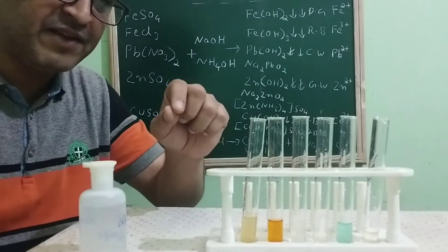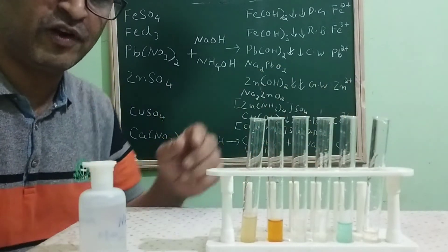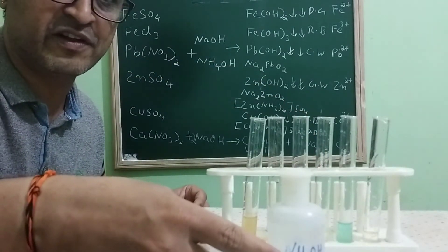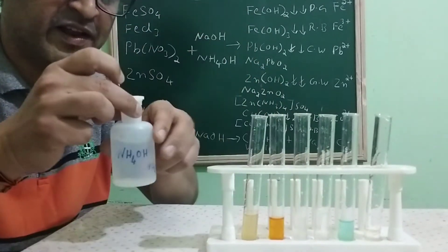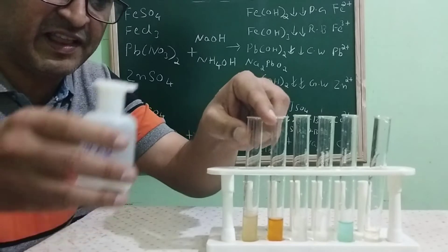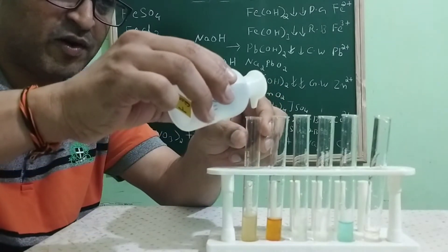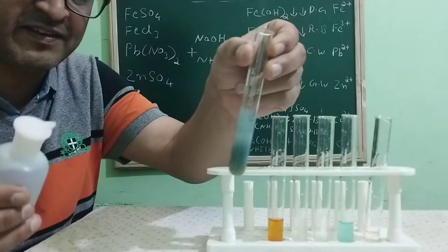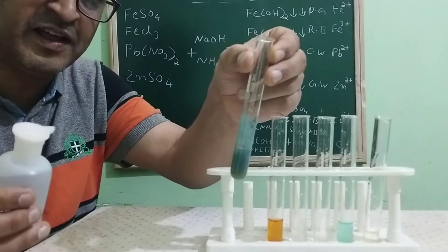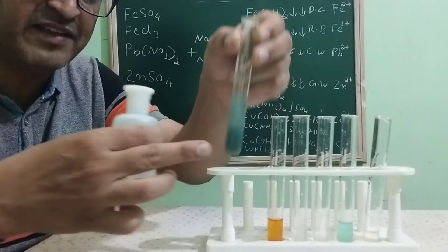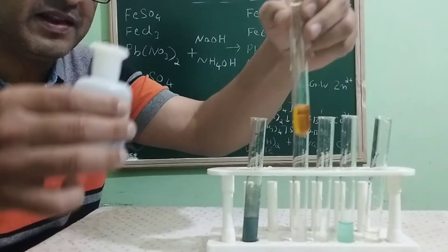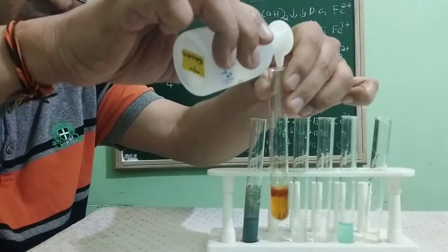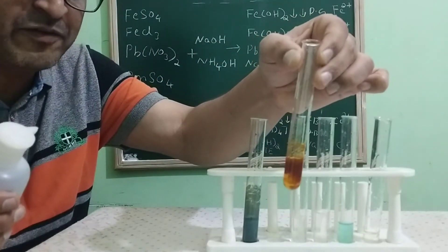Now what we are going to do is that again we have taken different salt solutions, and to all of them we are going to add the next solution — that is ammonium hydroxide. This is the one which contains ferrous sulfate salt solution. I am adding ammonium hydroxide — you got a dirty green precipitate, which indicates it has Fe2+. The next test tube is ferric chloride — on adding ammonium hydroxide, you got a reddish brown precipitate.